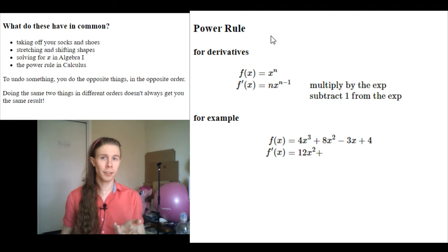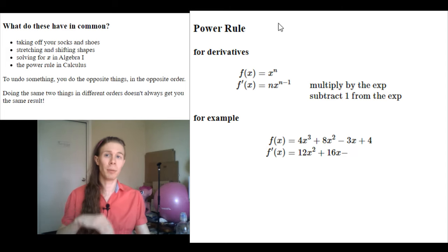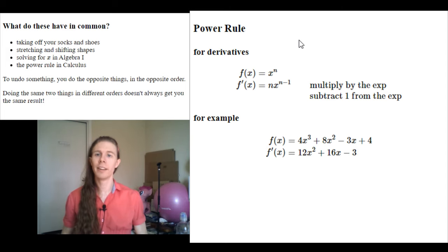And on the next term, 8 times 2 is 16. And then subtract 1 from the exponent to get 1, which I don't need to write. In the same way as I didn't need to write to the first power there, there's an invisible to the first power here. So I can treat the n as 1 on the 3x. Say I'm going to multiply negative 3 by 1, and get negative 3x to the subtract 1 from that 1, and get an exponent of 0.